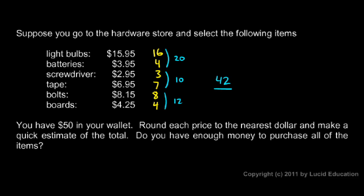So if those are going to cost $42, then the $50 that I have in my wallet should be enough, and I can go to the register without having to worry about coming up short. I can do this without having to pull out a calculator or add up all of these numbers exactly.